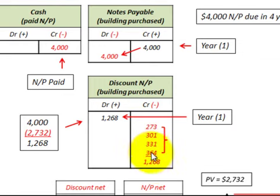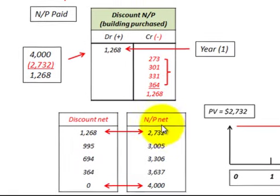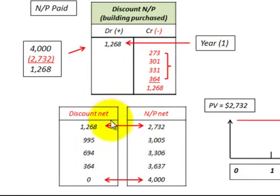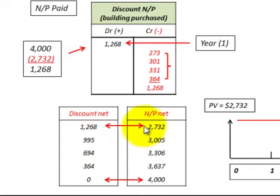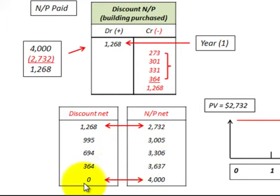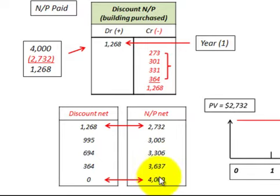Looking at our notes payable net amount versus our discount: each year we reduced our discount by the interest expense charged to that notes payable. Consequently, the discount decreases so our notes payable net increases. At the end of the fourth year we have a discount of zero, and our notes payable has increased from $2,732 — its present value — up to $4,000.